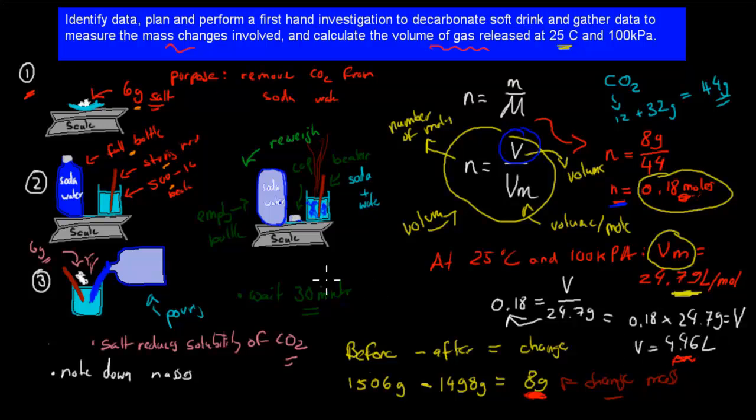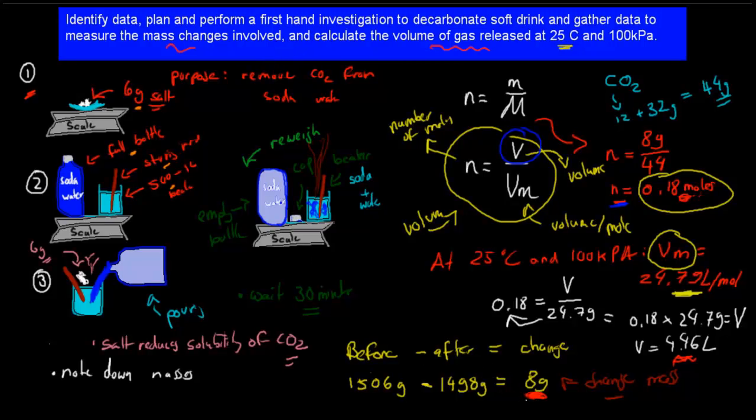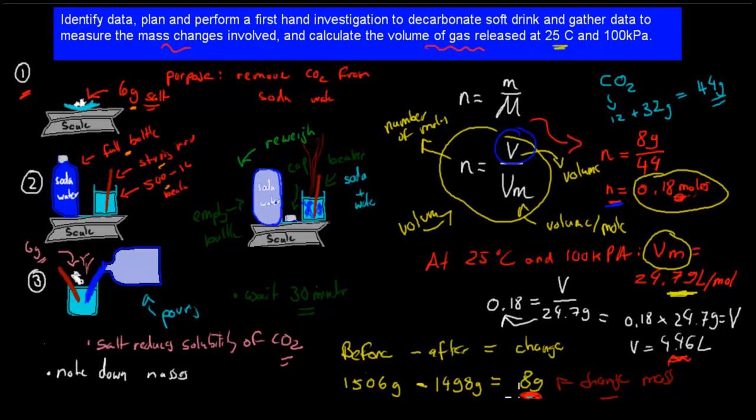So for this actual experiment, you should know that you need to be able to remember the experiment you've done. You might not have done this experiment. You might have done a different one. But the main point would be that you should remember how you did it, and how you calculated the actual difference in mass, which would be your carbon dioxide, and how you use that actual value to get to your volume that that mass occupies, using the actual volume equation. Number of moles equals volume divided by molar volume. I hope that was useful. Thank you for watching.